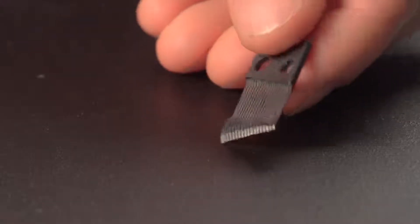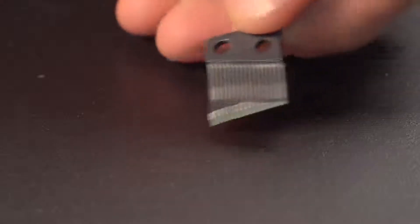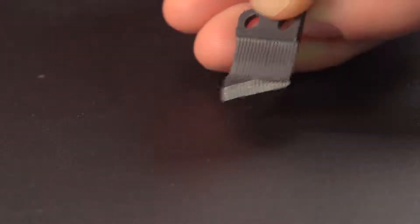Notice when you turn the comb over, the teeth don't have the same thickness. The longer teeth of the comb are weighted more on the ends. This added weight lowers their resonant frequency even farther.